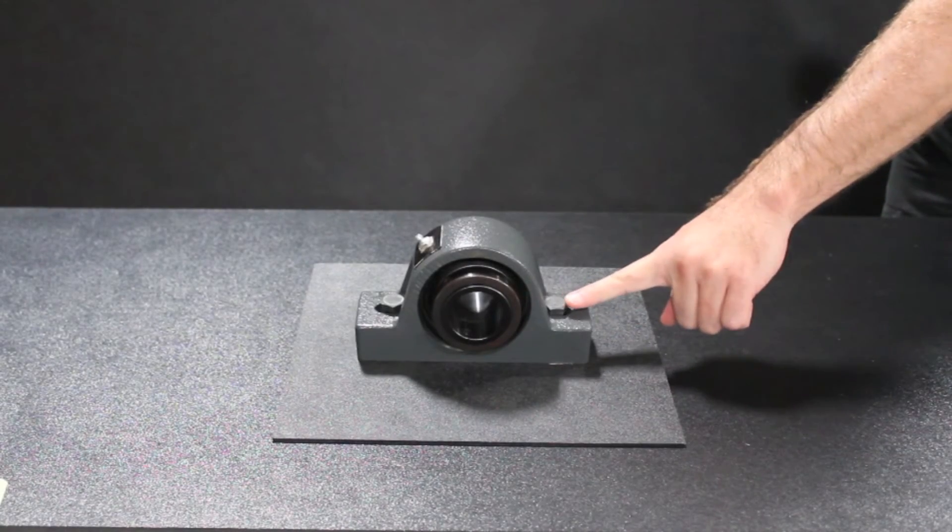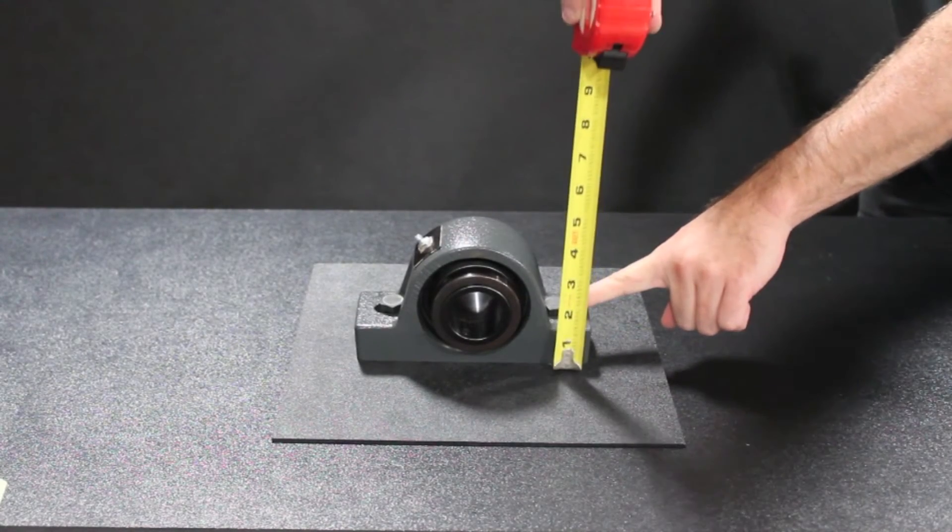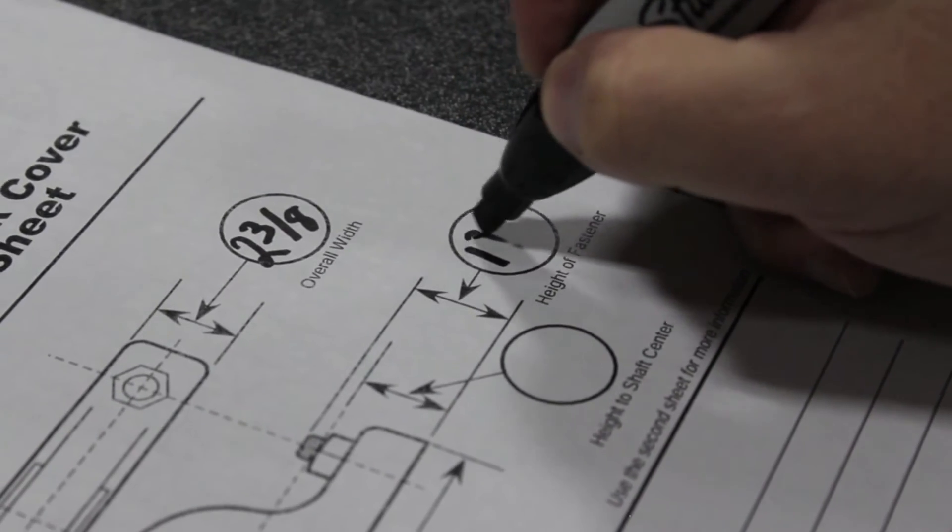The height of the fastener is found by measuring again from the bearing's mounting face to the top of the hardware holding it in place.